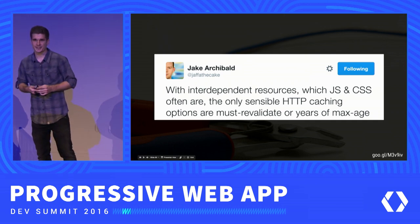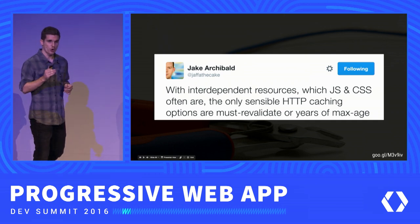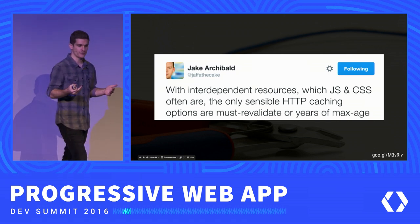What are good cache values? Jake has a really good answer: with interdependent resources like JavaScript and CSS, the only sensible HTTP caching options are must-revalidate or a years-worth of max-age. Your index HTML should never be cached — it should always be revalidated with the server using if-modified headers. Web fonts should probably be cached with years worth of max-age because they'll never really change. For JavaScript and CSS we incorporate the hash of the file into the file name and crank up the caching time to a couple of years — whenever a file changes, the file name changes, so the index HTML pulls in new resources while unchanged resources are still served from cache.